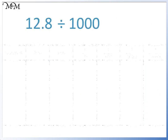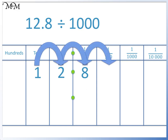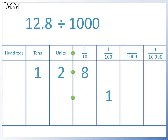12.8 divided by 1000. We are dividing by 1000, so we move each digit three places to the right. We'll start with the 1: 1, 2, 3. We have moved the 1 to the hundredths column. The next two digits follow. Each digit has moved three places to the right. We write in our zeros in the units column and in the tenths column. 12.8 divided by 1000 equals 0.0128.